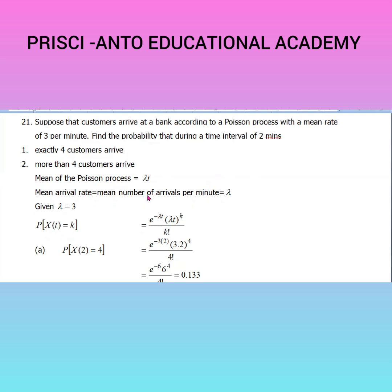The answer is: we know already, if you have studied Poisson process, the mean of the Poisson process is lambda*t. For a Poisson distribution, the mean is lambda, whereas the mean of the Poisson process is lambda*t. Here, the mean arrival rate — that is, the mean number of arrivals per minute — equals lambda, which equals 3.